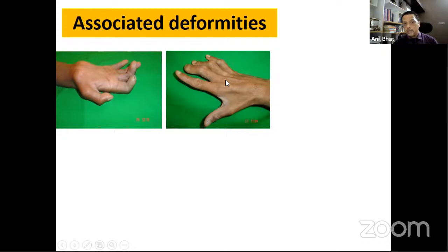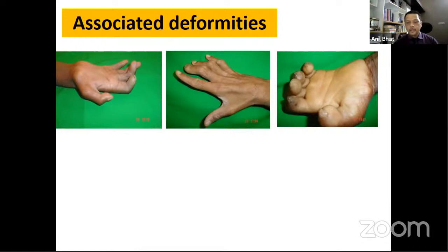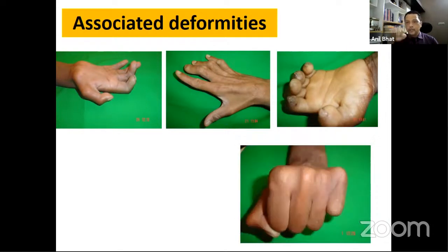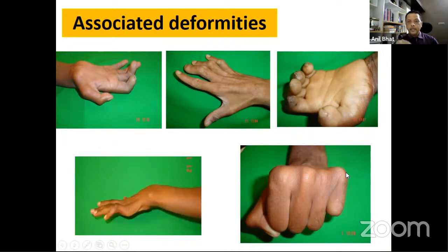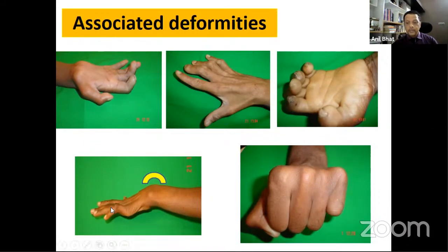First dorsal interosseous and web space wasting is very prominent because both the first dorsal interosseous and adductor pollicis are supplied by the ulnar nerve. In Hansen's patients, sensation is reduced, leading to fingertip trauma. The intrinsic balance is lost and the normal metacarpal arch is absent, resulting in a flattened hand. These patients often develop a habitual wrist flexion posture — flexing the wrist to achieve a tenodesis-like grip — which can become a deformity requiring management.